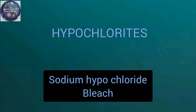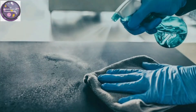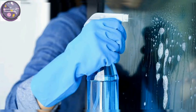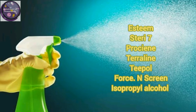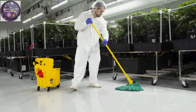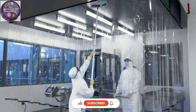Hypochlorites are the most commonly used chlorine disinfectants. Sodium hypochlorite is commercially available as household bleach. If we are talking about surface disinfectants, those names are as follows.